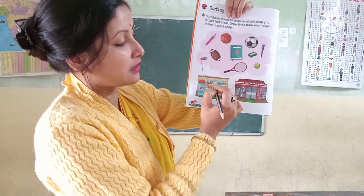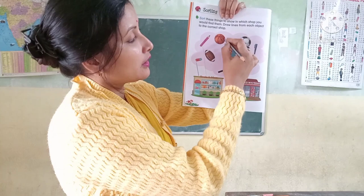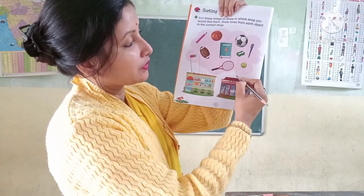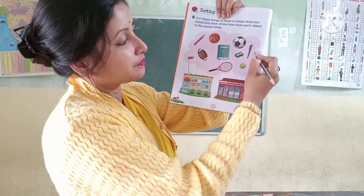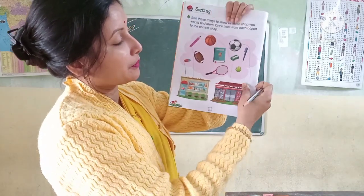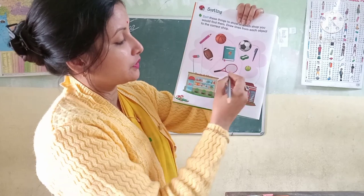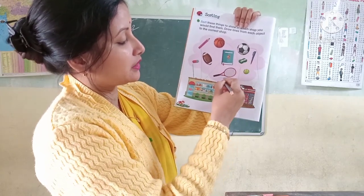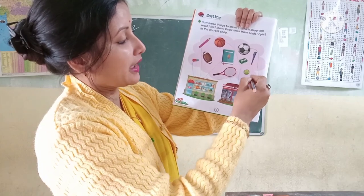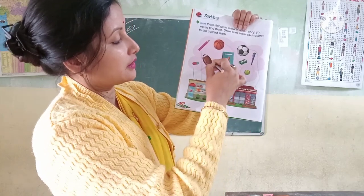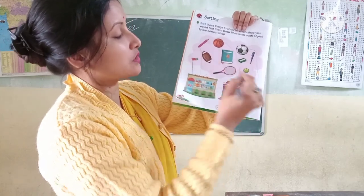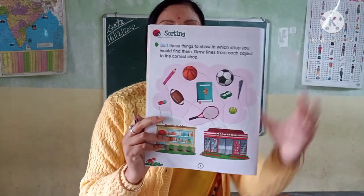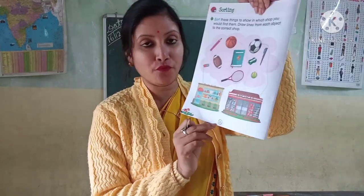Then basketball, football, book, record, sharpener, pen — these are the objects given. This one is a sports object. Like this you have to do in your numeracy practice book page number 4.